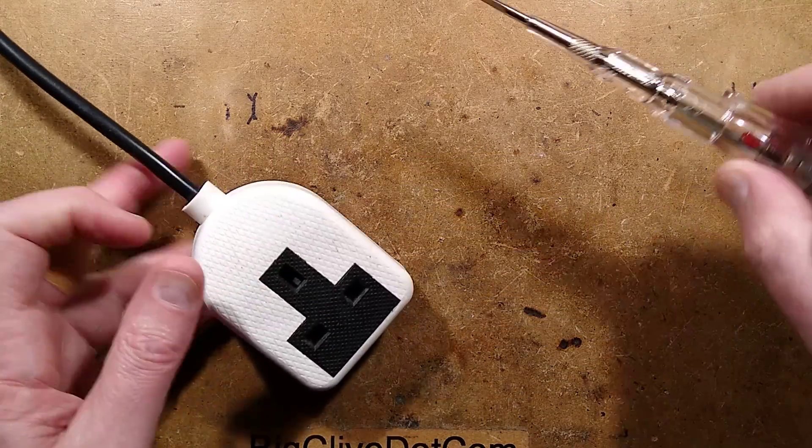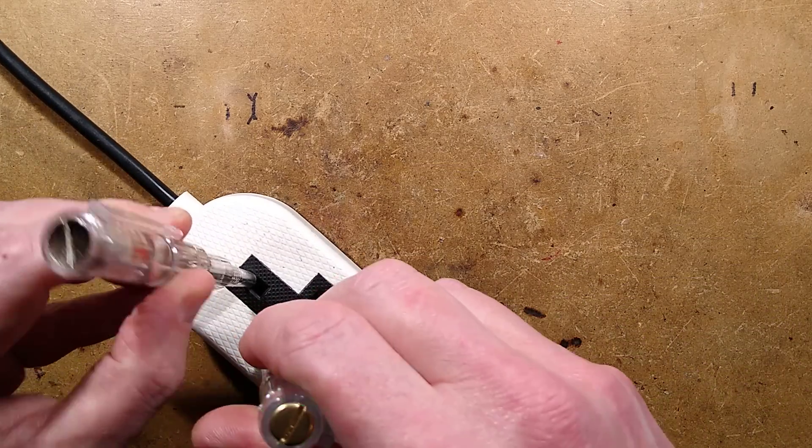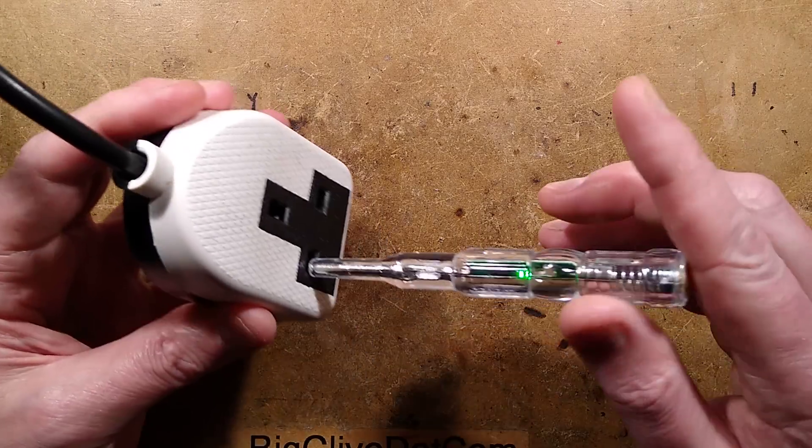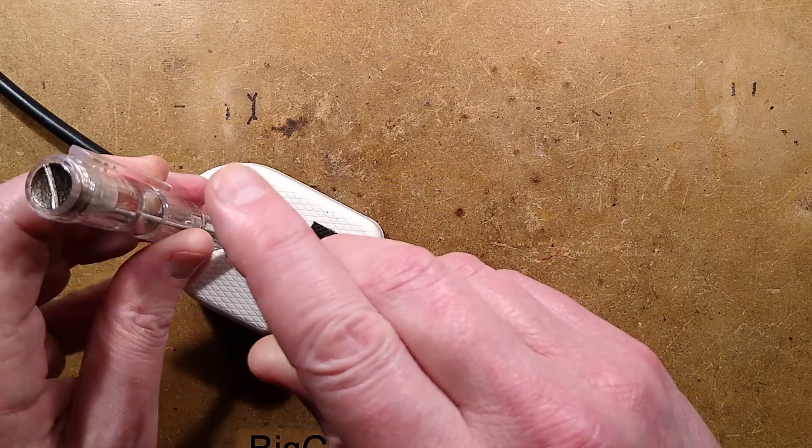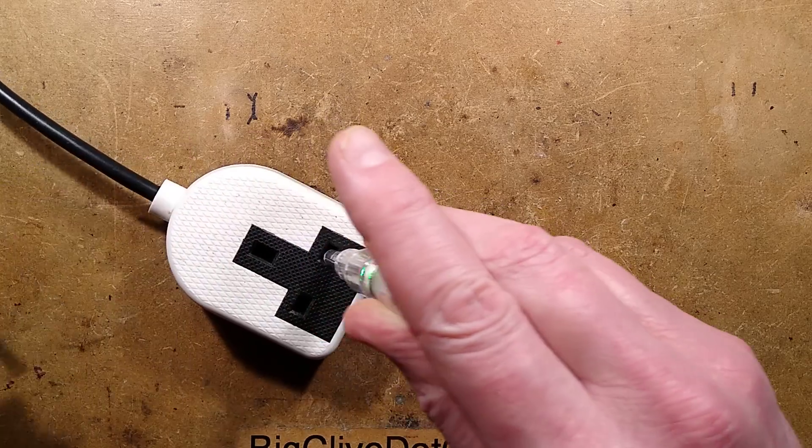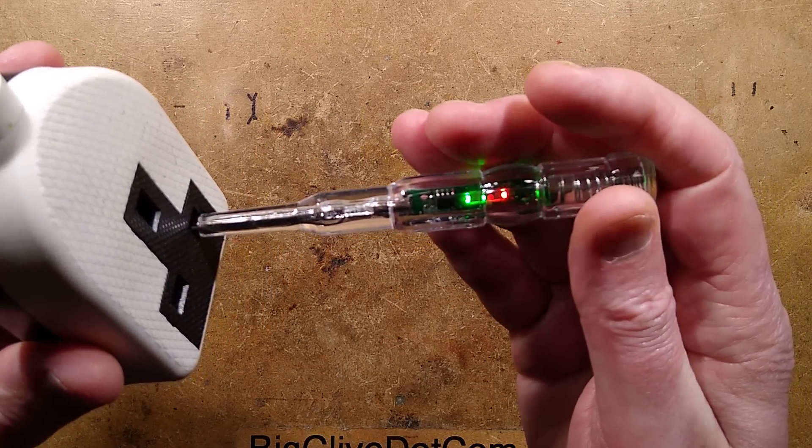And the idea is that if you, say for instance, I'll wedge the safety thing open with this screwdriver. If you go into, say, neutral, just the green LED will light. But then if you go into, being careful not to touch both at once here. If you go into the live, the red LED in there lights as well.